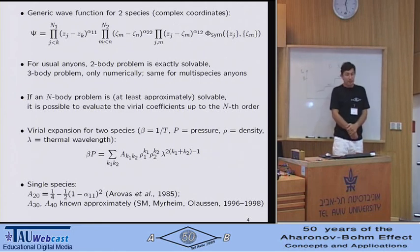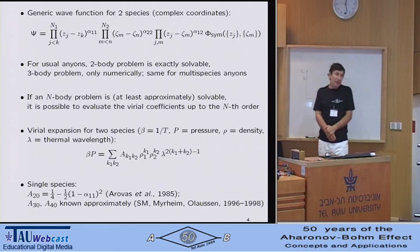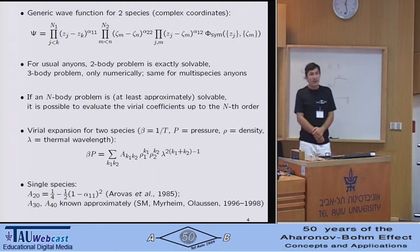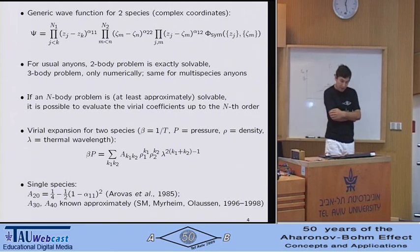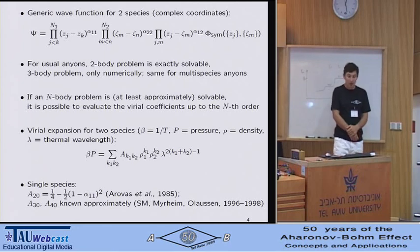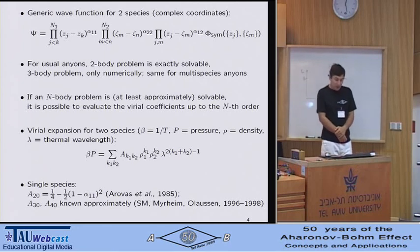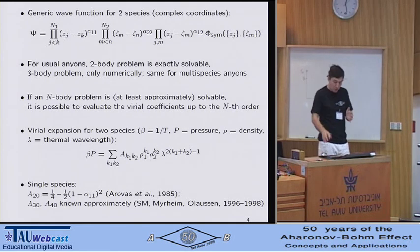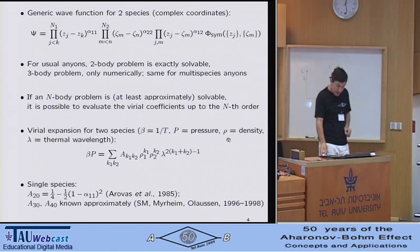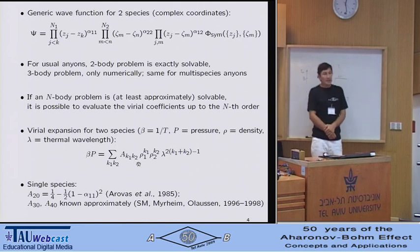Now, if we know at least approximately how to solve an n-body problem, one useful thing that we can do is evaluate the virial coefficients of up to the nth order. This is standard textbook statistical mechanics. The virial expansion is an expansion of pressure in terms of density. If we have two species, and for more than two, nothing is principally new, so I will just consider two. For two species, we have two densities, and I have extracted the dimensional factor in such a way that my virial coefficients are dimensionless.